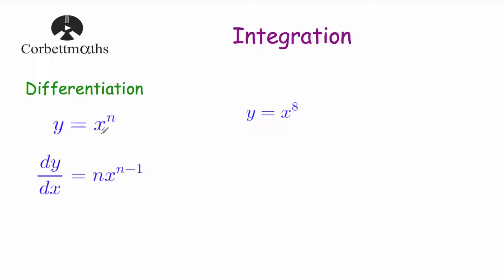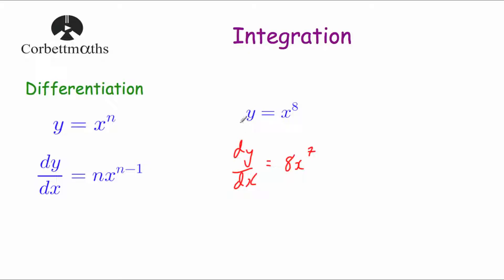If we had y equals x to the power of n, to differentiate — to find dy by dx, or the gradient function — we would bring down the power and reduce the power by 1. So for instance if we had y equals x to the power of 8, dy by dx would be equal to 8x to the power of 7. That process is called differentiation.